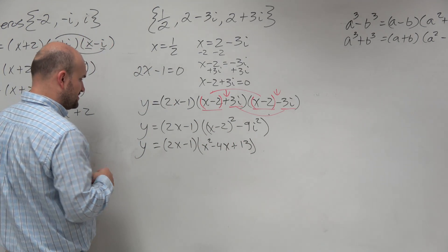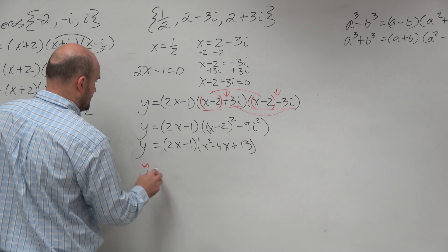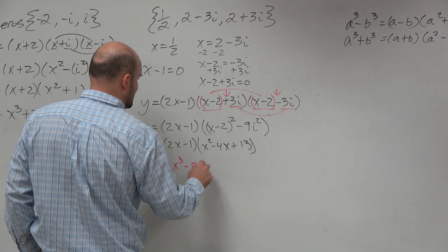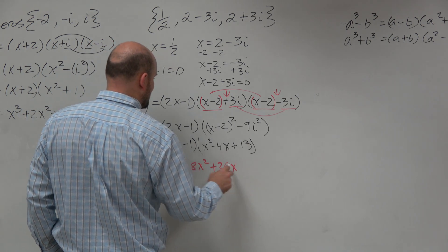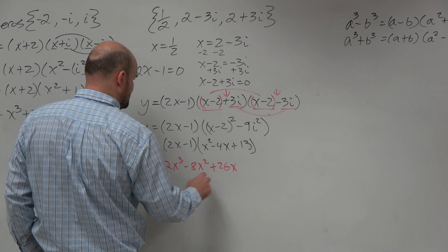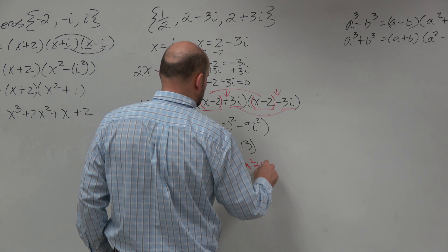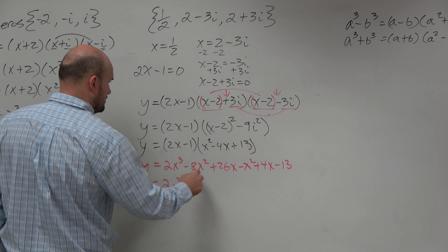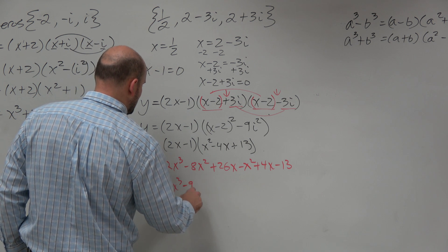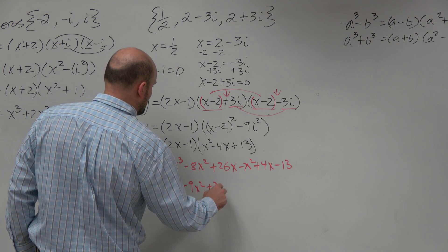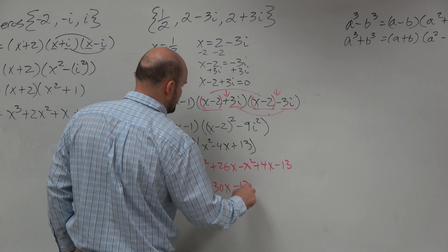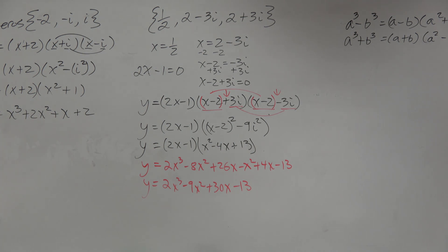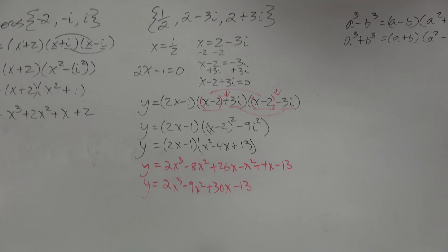Now I have a binomial times a trinomial. So I'm just going to multiply this out individually real quick for you. So this is 2x cubed minus 8x squared plus 26x. And then we'll do minus x squared plus 4x minus 13. And then I combine my like terms, x squared, x squared. So it's negative 9x squared plus 30x minus 13. That is done, guys. Thank you for cooperating.